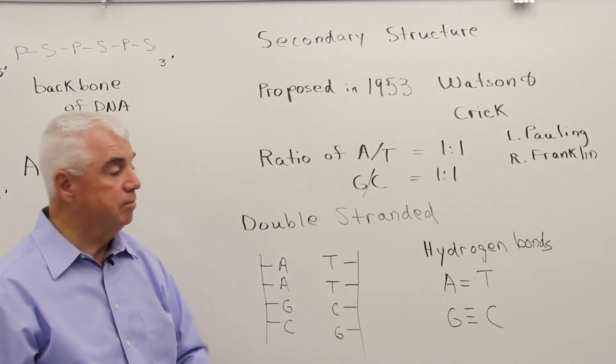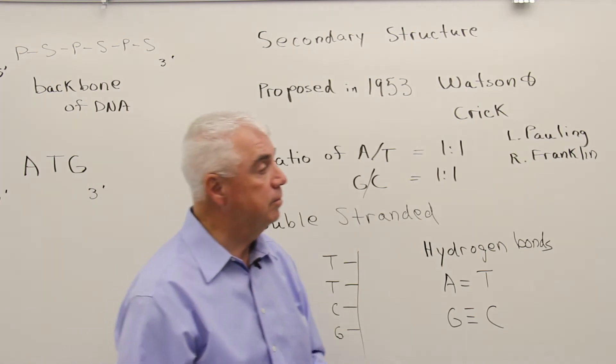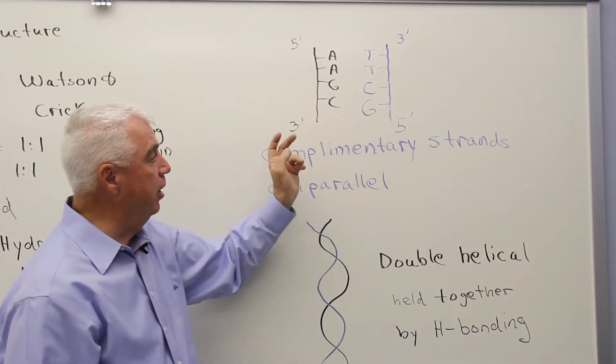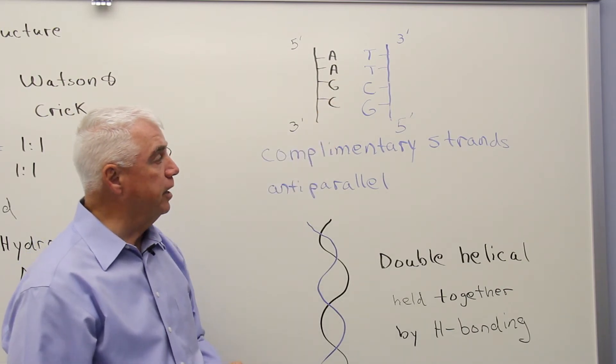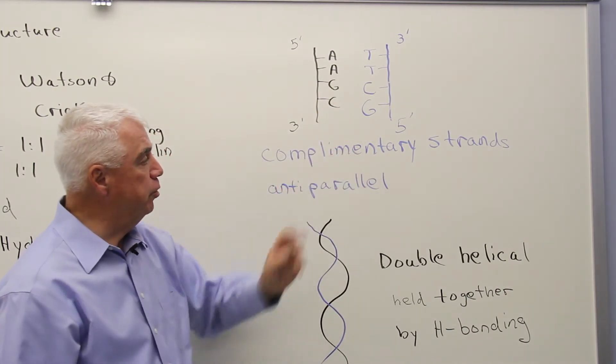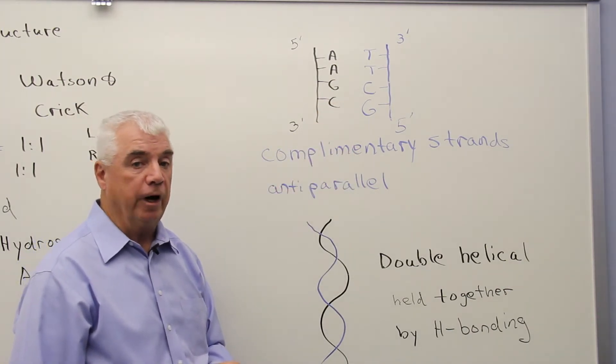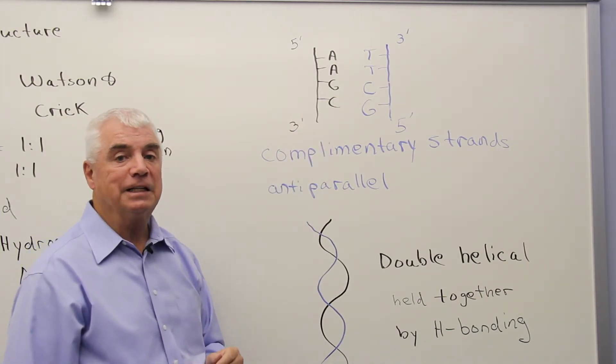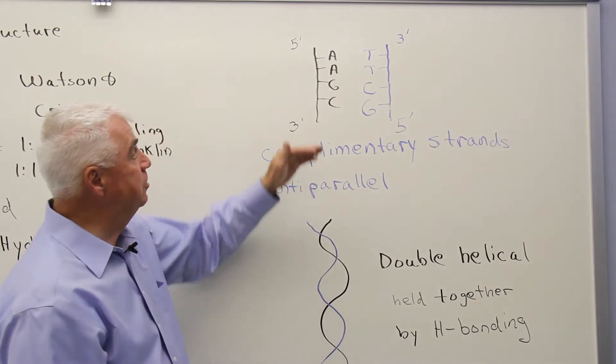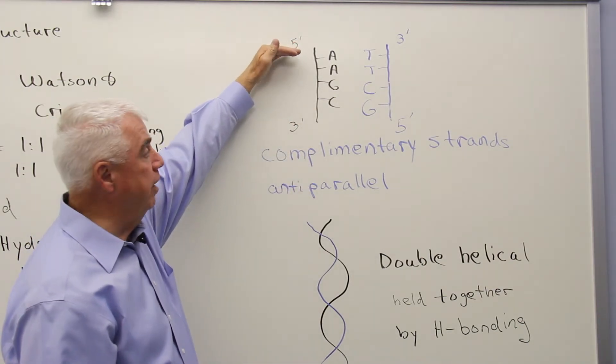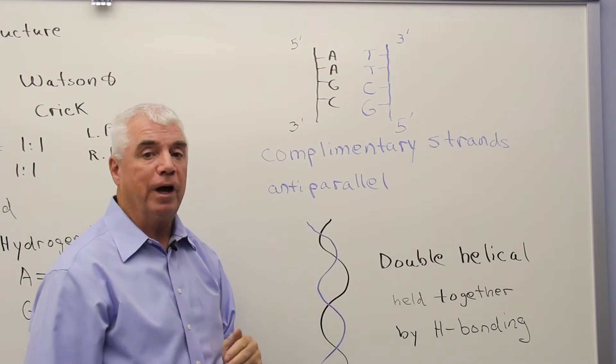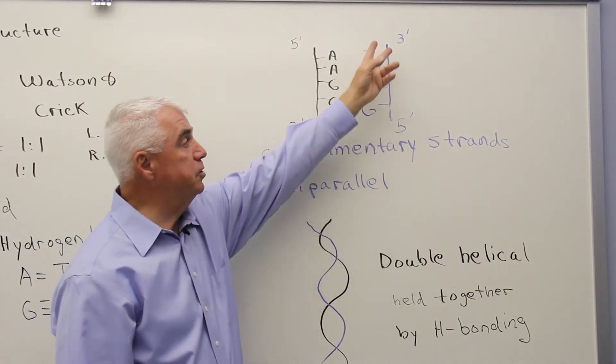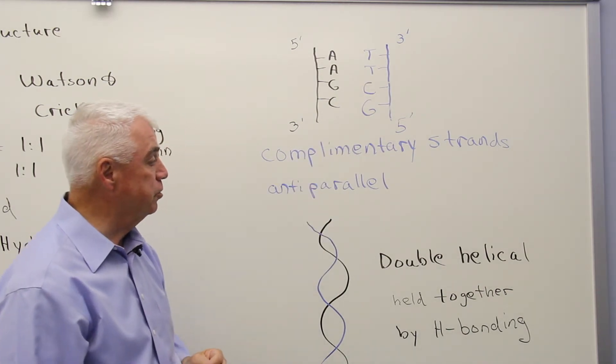I've repeated the two strands up here and shown one of the strands in blue. These two strands are said to be complementary, or the sequences are complementary. Furthermore, they're anti-parallel. That is to say, the direction on one strand is opposite to the direction on the other strand. Five prime to three prime on this side, and just the opposite in the other strand.